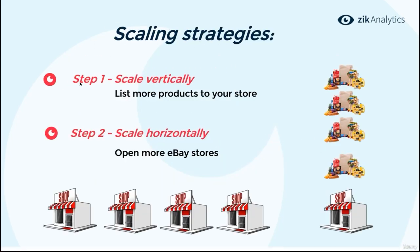Step one will be to scale vertically. Scaling vertically means listing more products to your store. You can see the example here of this store — it's one store with many, many items. You will follow the listing targets that we will set you during this phase, and you will list as many products as you can based on the targets. The goal is to establish and scale one store.